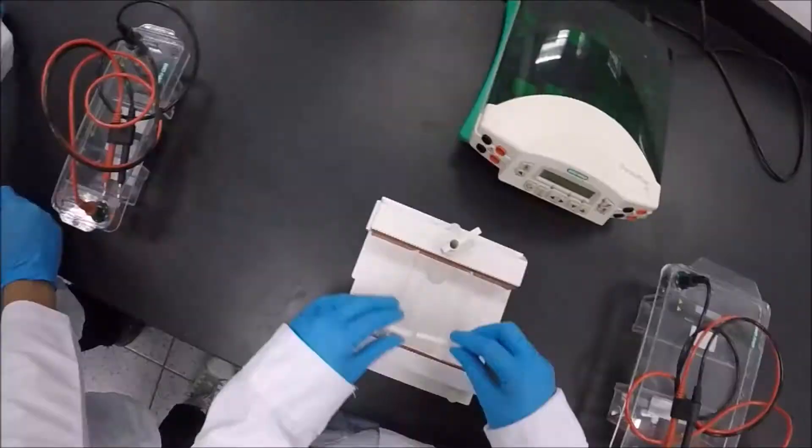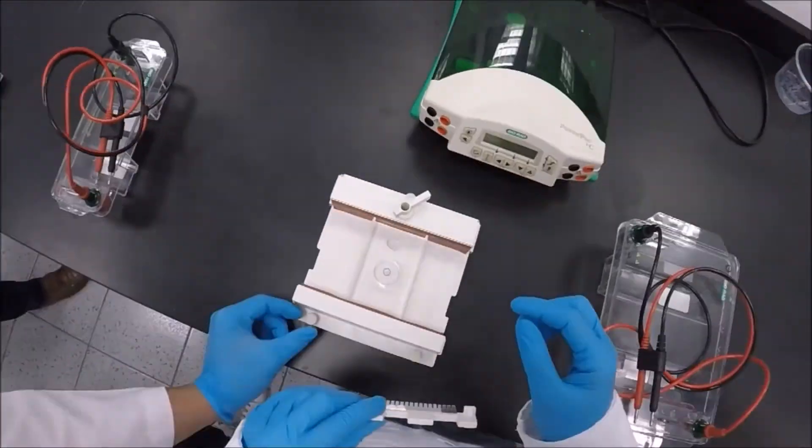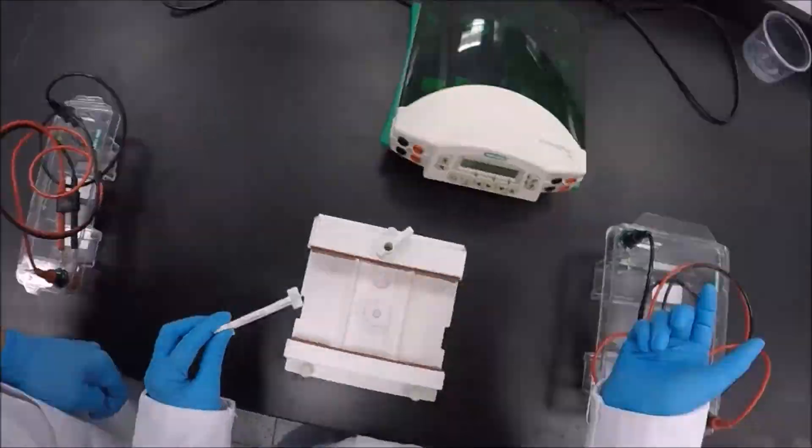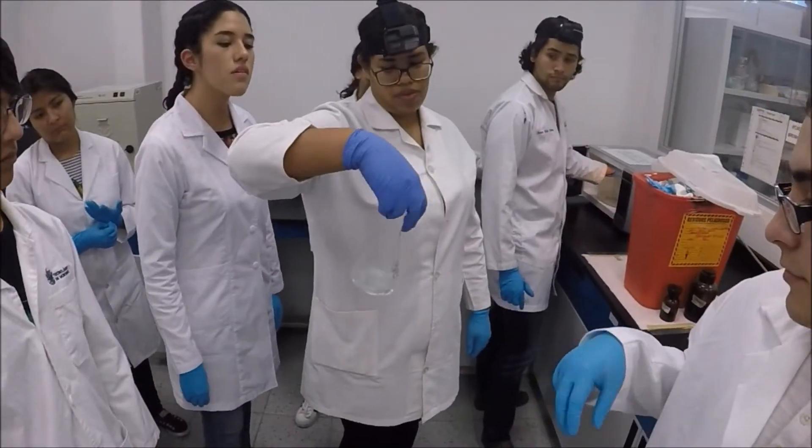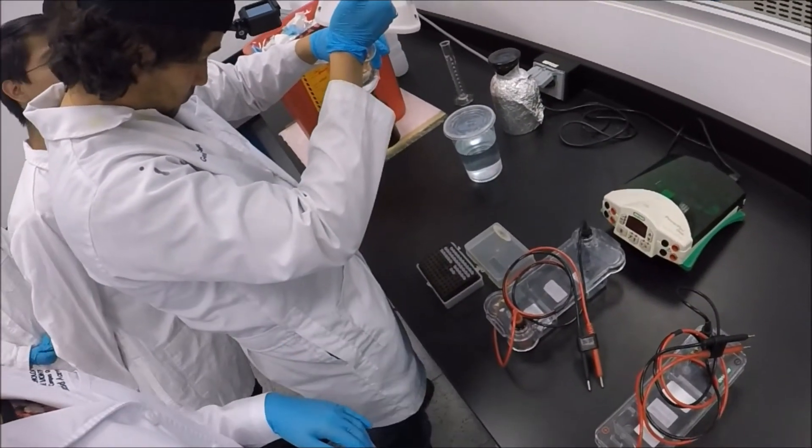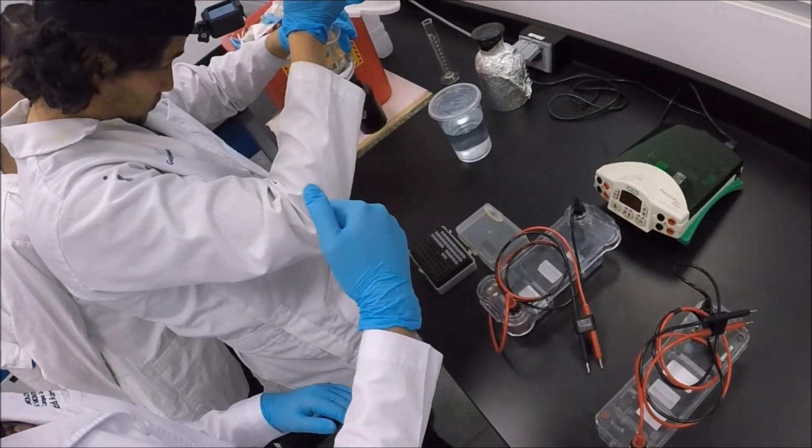While the samples were incubated, the electrophoresis cassette was prepared. The acrylic plate was placed on the cassette and leveled with the help of the leveling bubble. 1% agarose gel with TAE buffer 1X and ethidium bromide was prepared and set to get solidified.